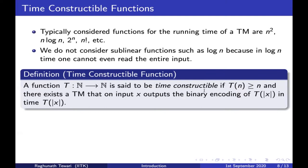This brings us to what are known as time-constructible functions — the types of functions we allow the running time to be. A function t is said to be time-constructible if: first, t(n) ≥ n (at least linear); and second, there exists a Turing machine that on input x outputs the binary encoding of t(|x|) in time t(|x|). Functions like n, n log n, 2^n, and n! are time-constructible.